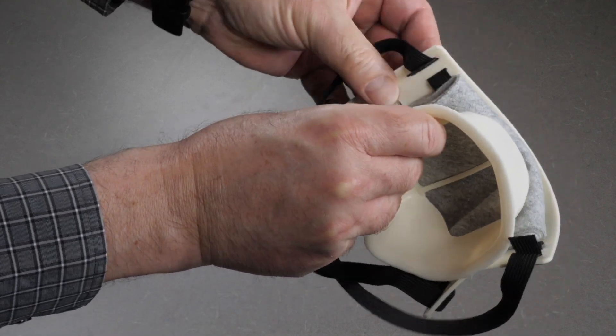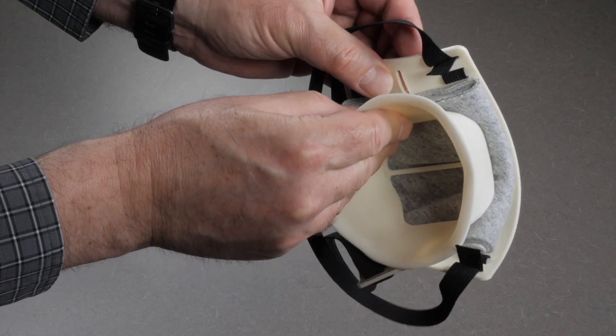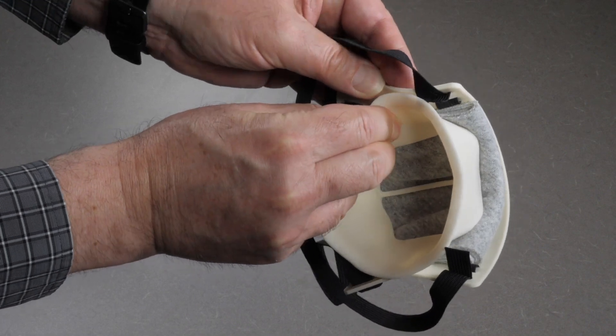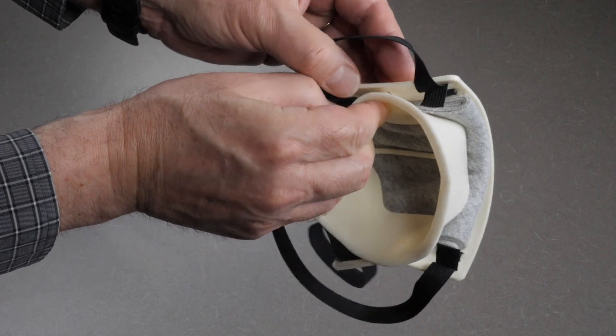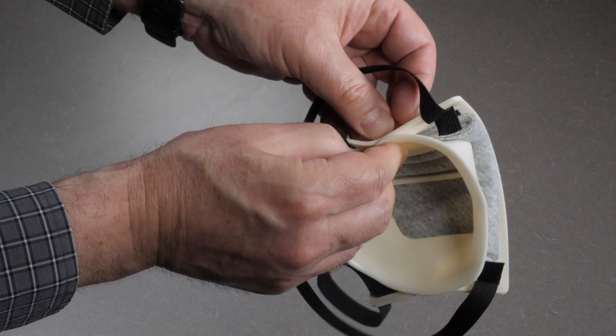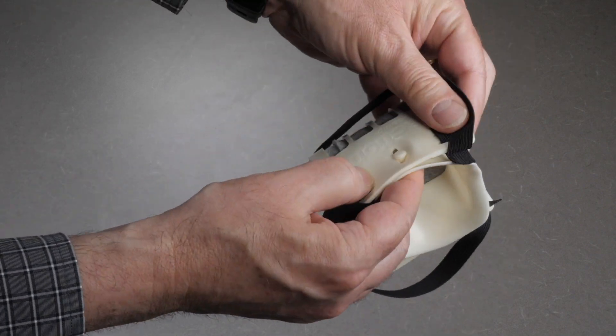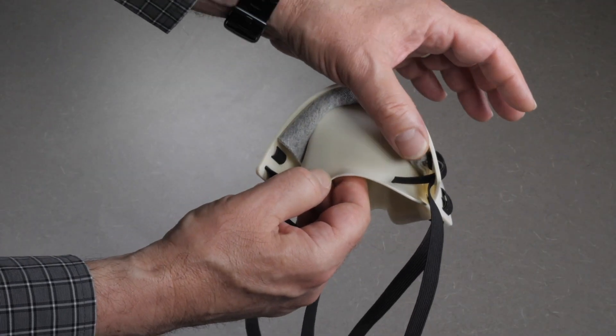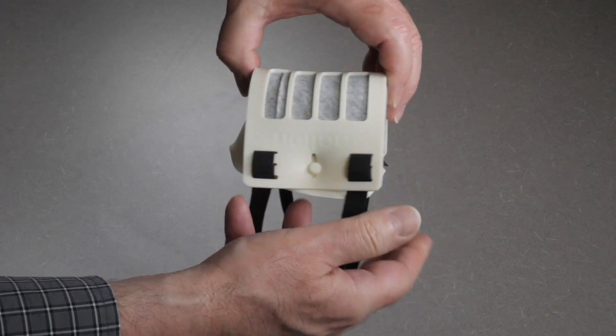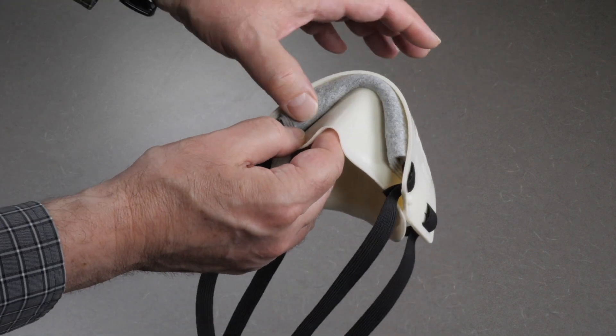Then snap the opposite side button on the base into the opposite side button hole on the cover. Make certain that the filter is even on the top and bottom of the cover.